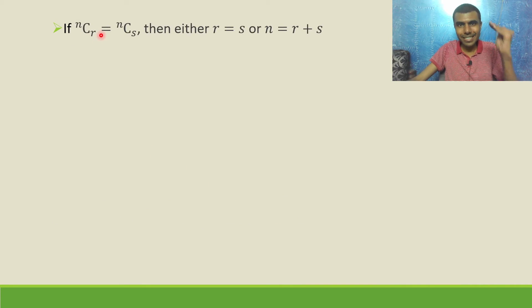Whenever NCR is equal to NCS, it means that either R equals S or N is R plus S. This is a condition you can remember. If NCR equal to NCS, that means either R should be equal to S or N must be equal to R plus S.